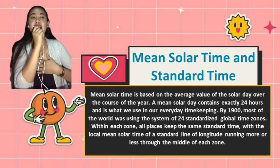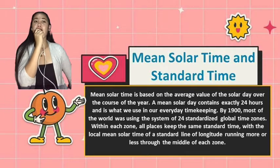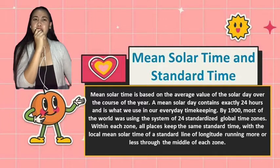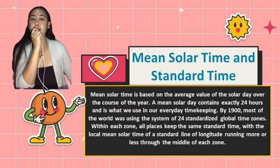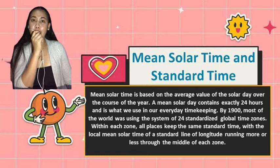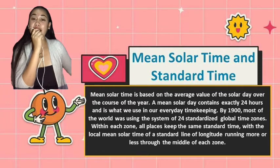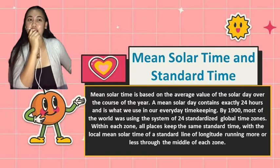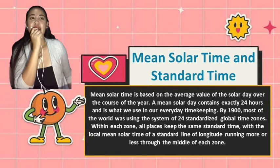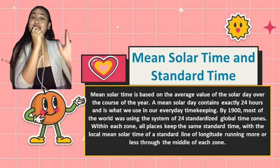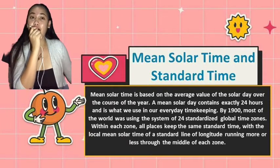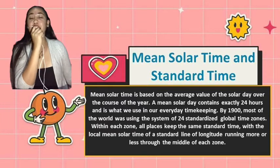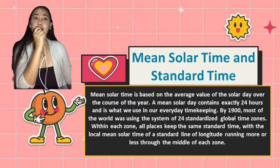Under standard time, we have daylight saving time. It is simply the local standard time of the place plus one hour. It has been adopted for spring and summer use in most states in the United States, as well as in many countries, to prolong sunlight into the evening hours.